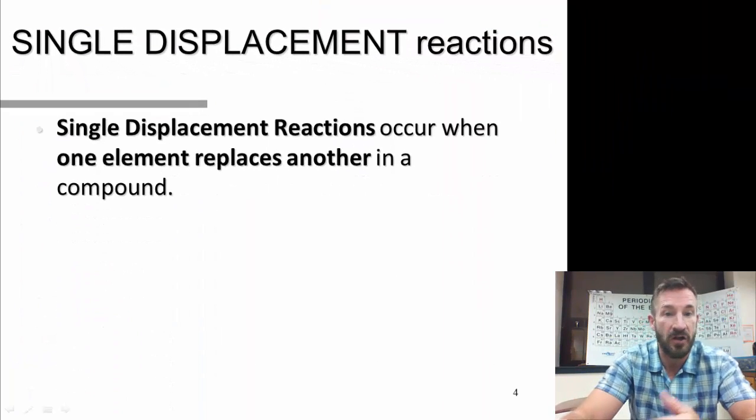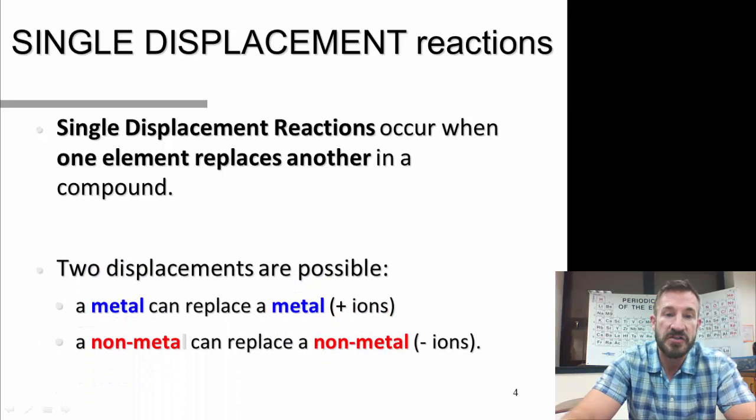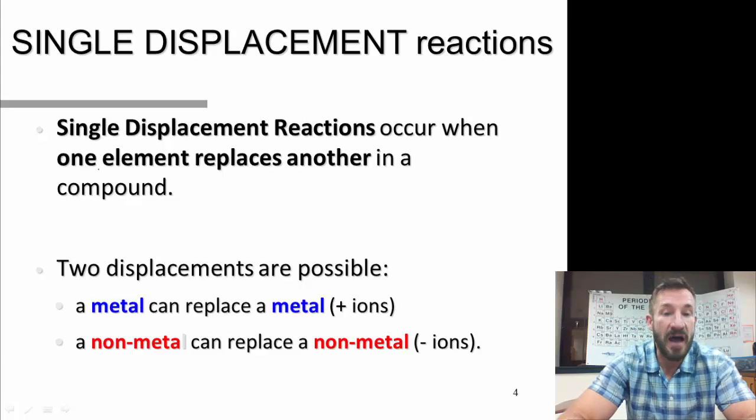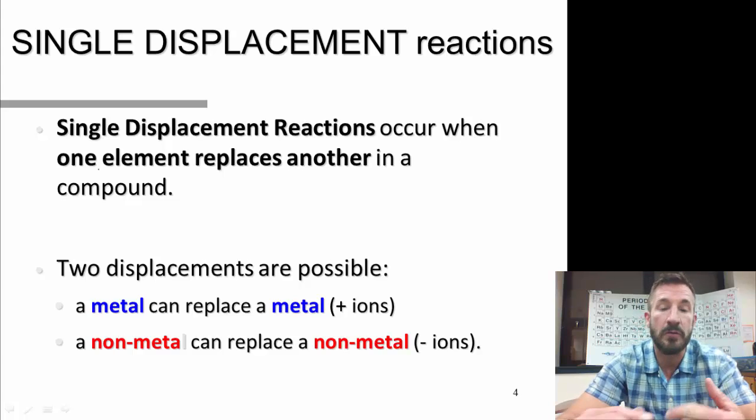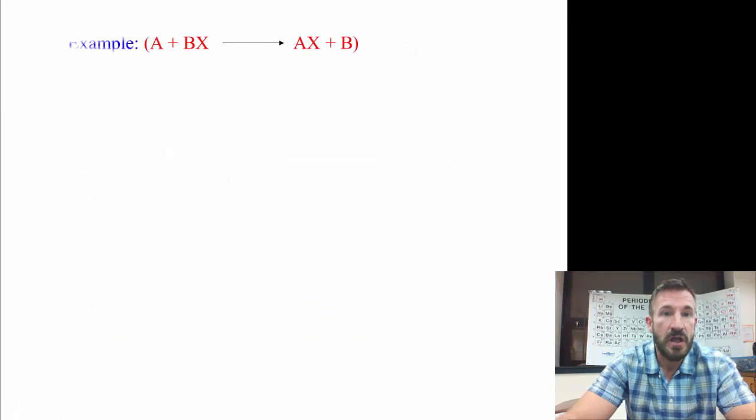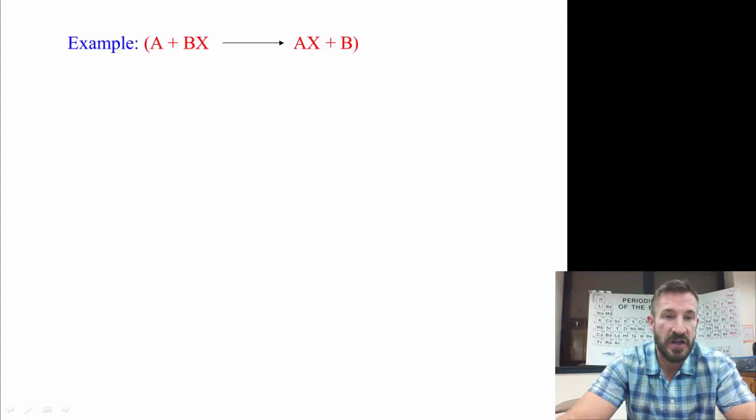So let's look at some examples. Single displacement reactions occur when one element displaces another in a compound. In displacement reactions, a metal, which is positive, can displace another metal. And a non-metal can displace another non-metal. Remember, non-metals are negative. Some examples. So the A would represent the element. The B and the X would represent the compound.